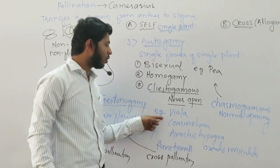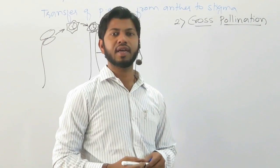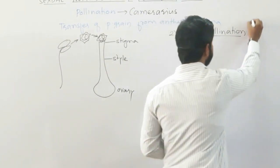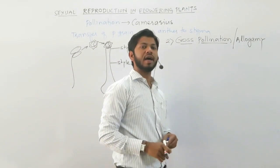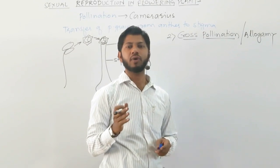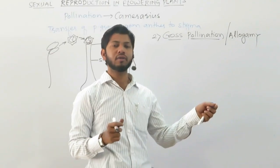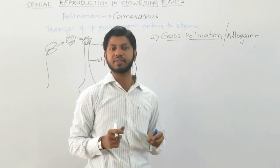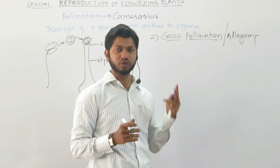Examples of cleistogamous flowers are Viola, Commelina, Arachis, and Oxalis. The second type of pollination is cross-pollination, also known as xenogamy. Cross-pollination is the transfer of pollen grain from the anther of a flower on one plant body to a flower on another plant body, so pollination takes place between two different plant bodies.